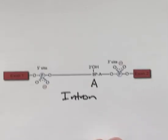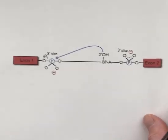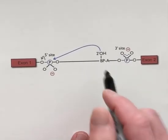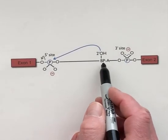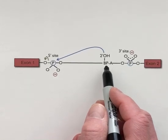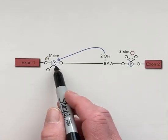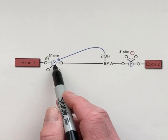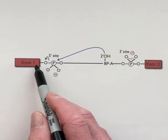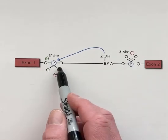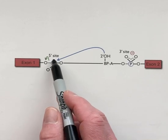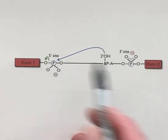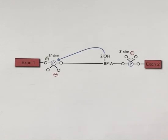And that's shown in this next panel. So nucleophilic attack: branch point A, the two prime hydroxyl group is the nucleophile. The electrophilic center is the phosphorus group connecting exon 1 to the intron, and that is the phosphate at the five prime site. And the leaving group here is the three prime hydroxyl of the first exon.